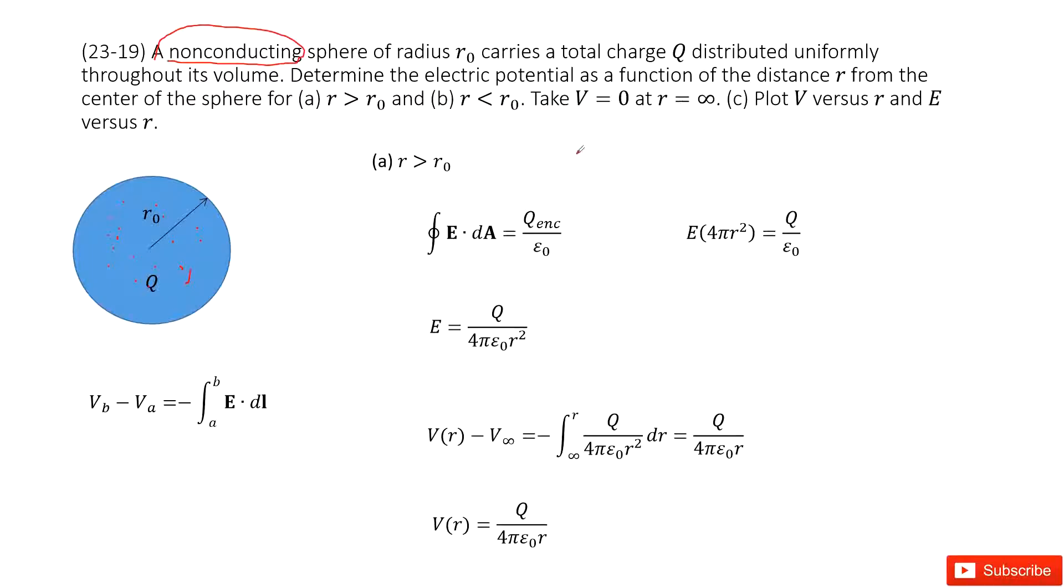Normally we can use this function to get the potential difference. As this one tells us at infinity, the potential is 0, right? So we can consider a as infinity. So then Va is 0. And so this one we can find b, right?